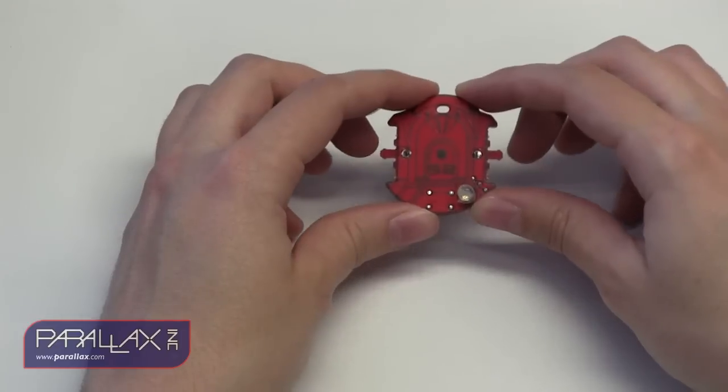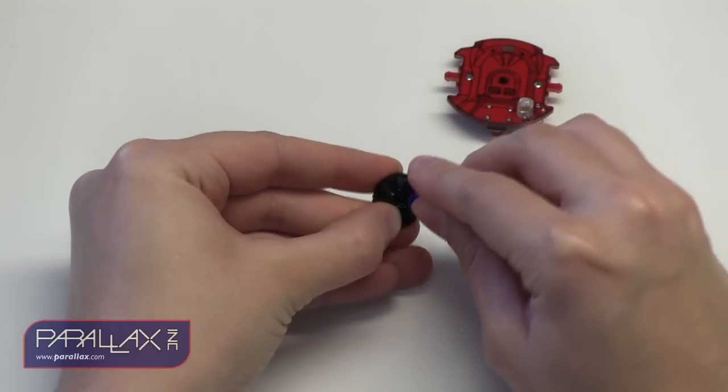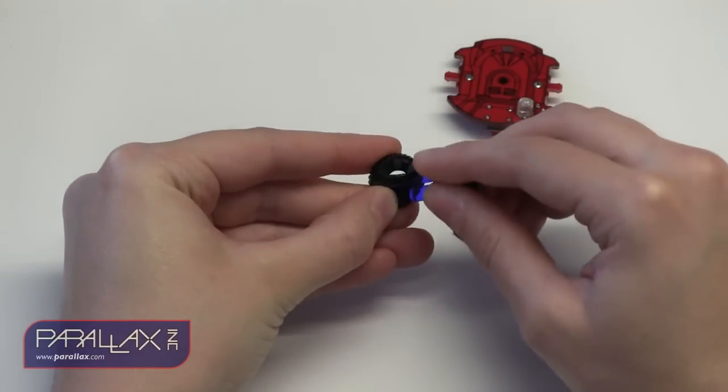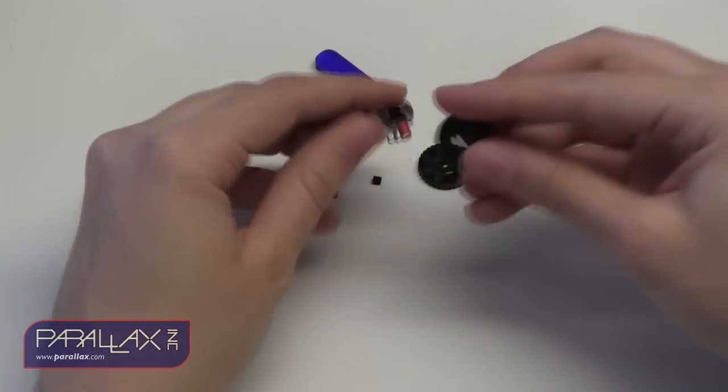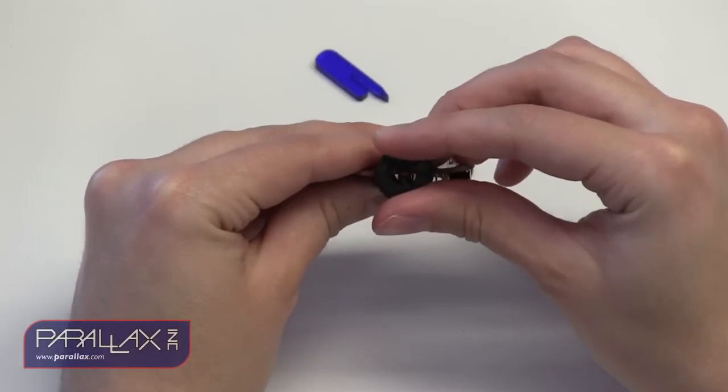Now that everything is soldered, we're ready to snap the wheels into place. Use the bender tool to remove the excess plastic from the wheels. Then align the wheels so that the spoke pattern is facing outward and snap them into place.